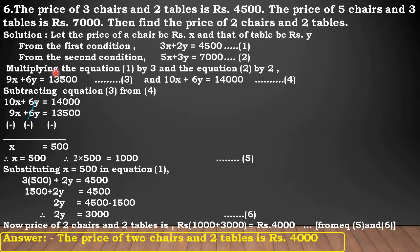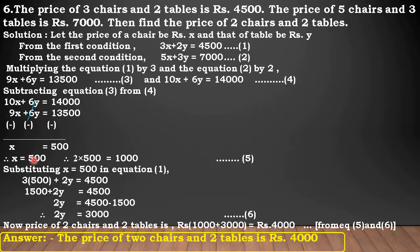Multiplying equation 1 by 3 and equation 2 by 2: we get 9X plus 6Y is equal to 13,500 — number this equation as 3. Multiplying equation 2 by 2, we get 10X plus 6Y is equal to 14,000 — number this equation as 4. Now, subtracting equation 3 from equation 4: plus 6Y and minus 6Y get cancelled. Therefore, X is equal to 500. We need the price of 2 chairs, so 2X is equal to 2 into 500, which equals Rs. 1,000. Number this equation as 5.